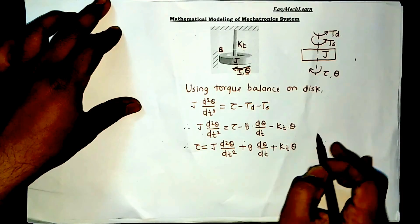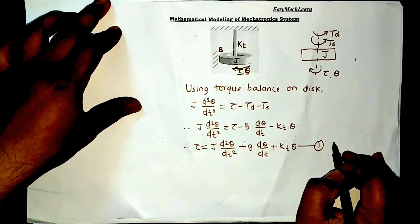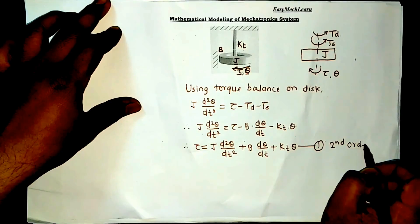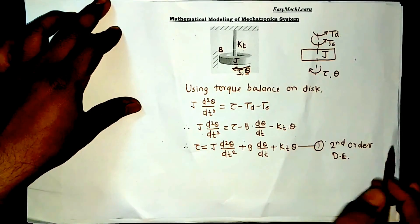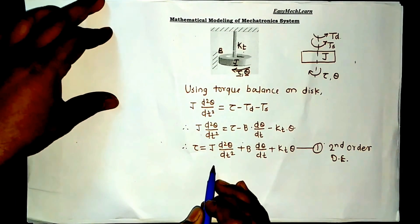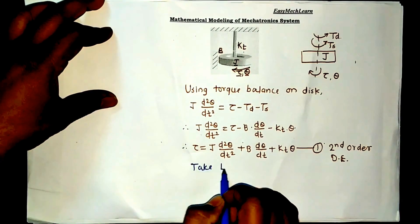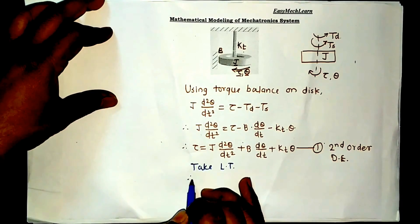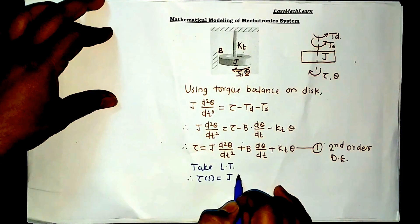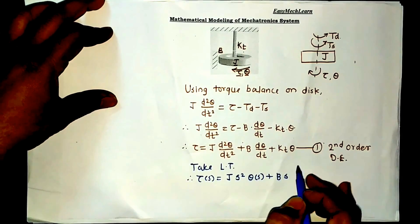Now take Laplace transform of equation number first. Tau of s is equal to J into s square theta of s plus B into s theta of s plus Kt into theta of s.